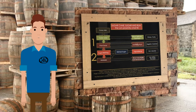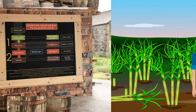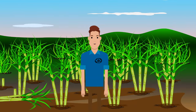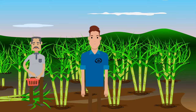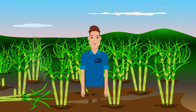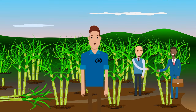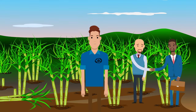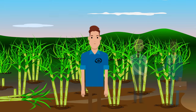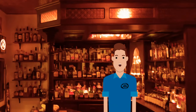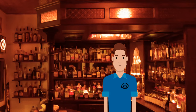Besides molasses and rum agricole, there are a few distillers — such as Richland Rum located in the state of Georgia — that use a syrup derived from the sugarcane. As for where distillers typically get their molasses, some grow their own sugarcane and process it themselves, while others purchase the molasses or juice from an outside source. The next stage in the process is fermentation, which will be covered in the next module.